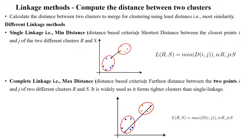Welcome to linkage methods, which are the measures used to calculate the distance between two clusters to learn similarity patterns between the cluster data points. We have different linkage methods. The first one is single linkage method, also called the minimum distance method. This is a distance-based criteria.